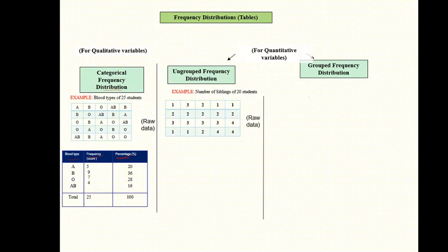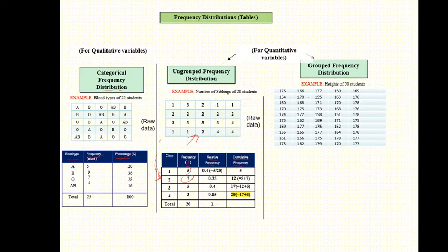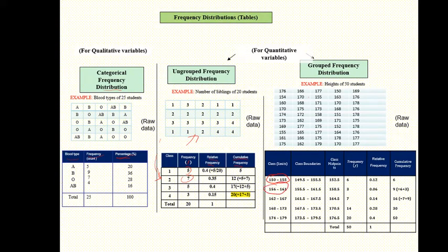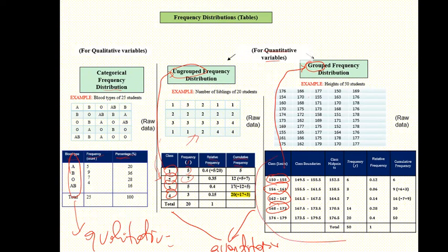We collected data from 20 students, and this is the raw data. We write them as classes — 1, 2, 3, 4 — these are the number of siblings. Then we count how many times we see them and calculate relative frequency. For grouped distribution, we look at the height of 50 students. Since it's hard to list all values as individual classes, we create intervals. The classes are just numbers for ungrouped, but intervals for grouped. This is why we have grouped vs ungrouped frequency distribution.